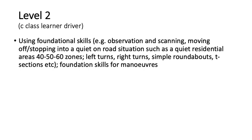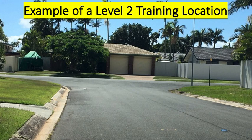Level 2: Using our foundational skills — observation and scanning, moving off, stopping into a quiet on-road. Moving into quiet on-road situations such as residential areas, 40, 50, 60 zones, left and right turns, simple roundabouts and T-sections, and starting to work on maneuvers. This is an example of a Level 2 training location.